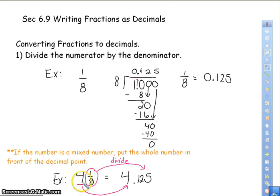If it's a mixed number like it is here, it should be greater than 1. And basically all you have to do is make sure you put that 4 out in front of your decimal.